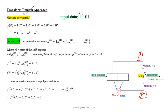For the input sequence 1 1 1 0 1, the message polynomial can be written by associating each bit with a power of d: d power 0, d power 1, and so on. We write the message in terms of this message polynomial. We also express the generator sequences g1 and g2 as polynomial equations.